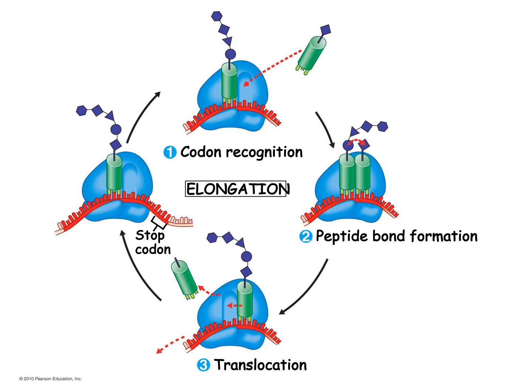Those translation factors recognize this pause in the process and begin the termination of protein synthesis. The polypeptide chain is removed from the peptidyl tRNA and can now go fold into a final functional conformation. The two subunits of the ribosome dissociate, and the messenger RNA falls away. The messenger RNA can be utilized again as instructions to synthesize a protein, and the ribosomal subunits can come back together and produce an intact ribosome, so this process can continue over and over again.